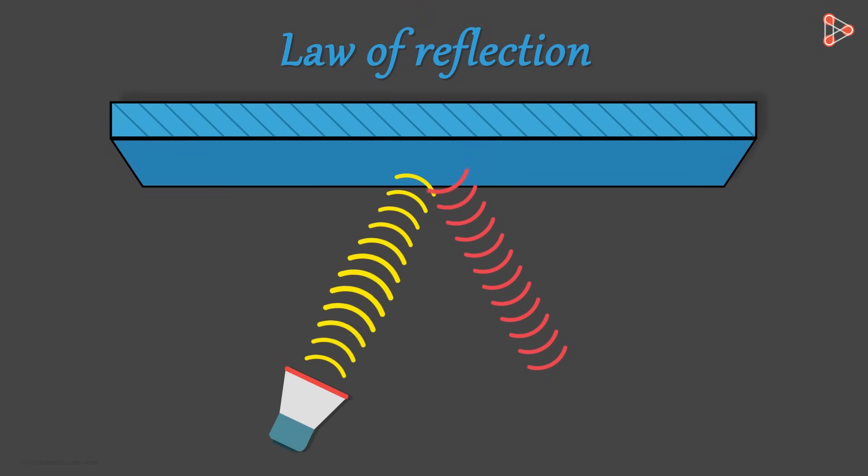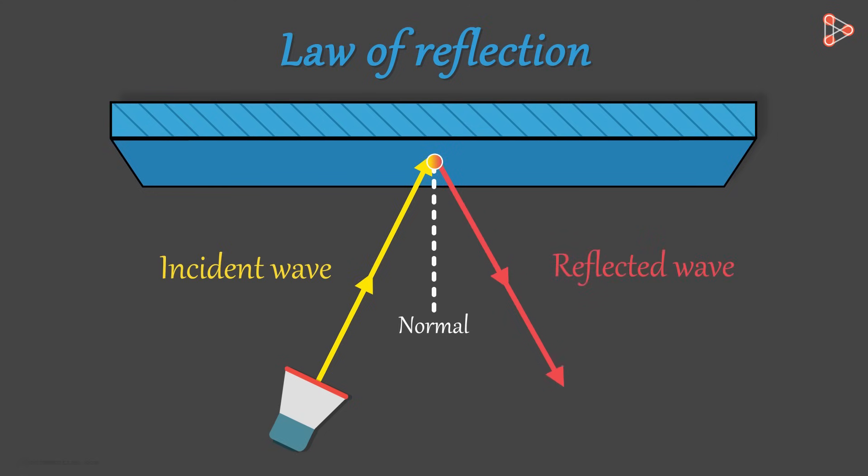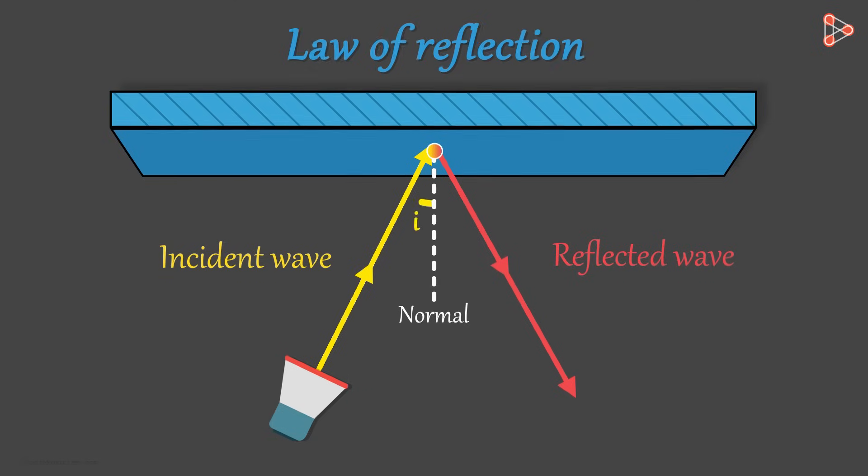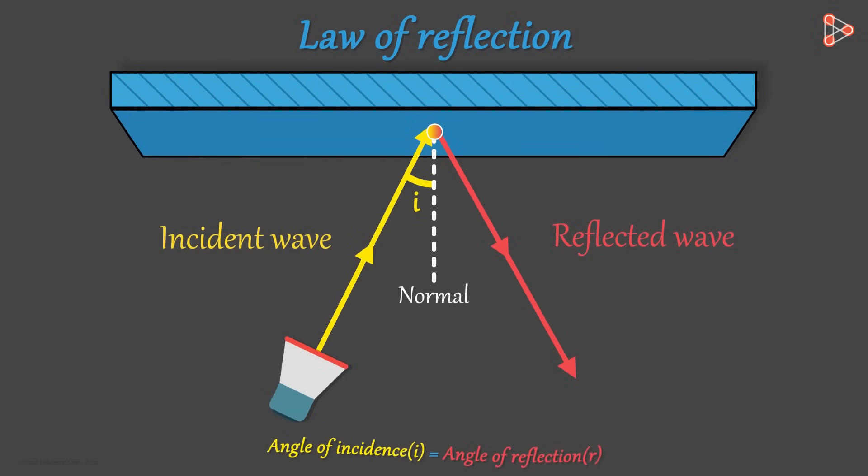Say we have our source which is emitting sound. And assume one of the sound waves strikes the surface at this point. Let us draw a normal to this surface. Normal is nothing but the line which is perpendicular to the surface at the point of incidence. Now this wave will be reflected from the surface. The law of reflection tells us that this sound wave will be reflected back in such a way that the angle of incidence i is equal to the angle of reflection r.